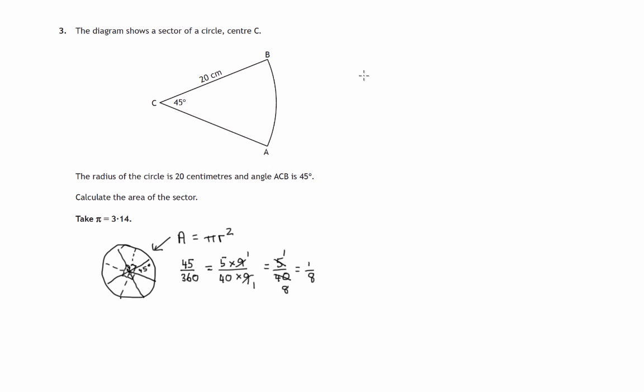Anyway, we're asked to calculate the area of the sector, so let's get going with that. Area of the sector equals one eighth, for any of these reasons down here, of πr². So that's an eighth times π. Now the radius is 20, so 20 times 20.